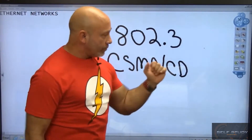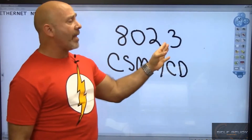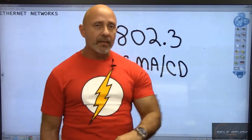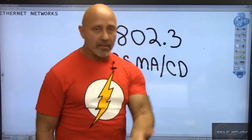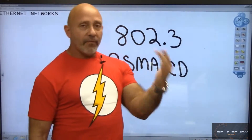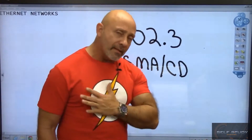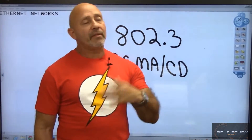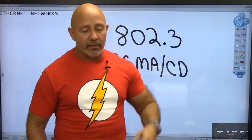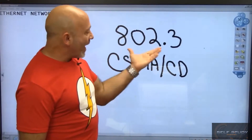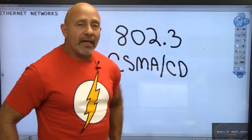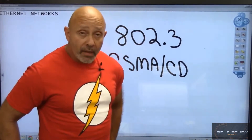802.3 is the Ethernet standard. Now we have variations of 802.3 because we went from 10 megabits per second to 100 megabits per second to 1000 megabits per second, and then we get into fiber optics. The faster you go, you have TX, CX, OX — all these different cabling standards. But 802.3 is the Ethernet standard. If ever asked what IEEE standard you use, it's 802.3.